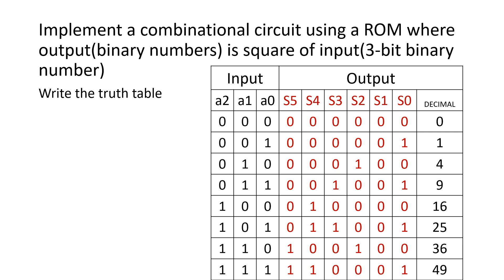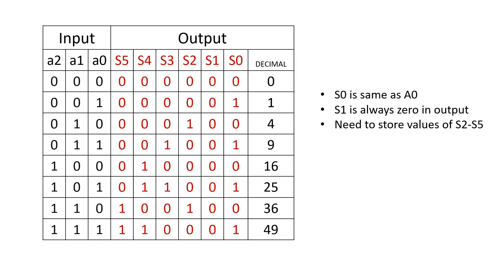So, to represent these decimal numbers in binary, we are going to need 6 output lines. S0, S1, S2, S3, S4, S5 and these decimal numbers are transferred to binary numbers. On this slide, once again, I am repeating the truth table. Now, we are going to carry out some reductions by observation. If you look at A0 input and S0 output, they are always same because we know square of even number is even number, square of odd number is odd number. So, least significant bit remains same. Once again, if you look at the output, S1, you will find that it is always equal to 0. So, there is a need to store only values which are S2 to S5.